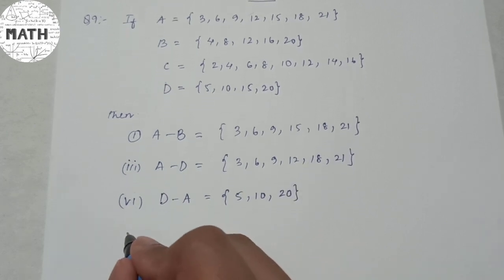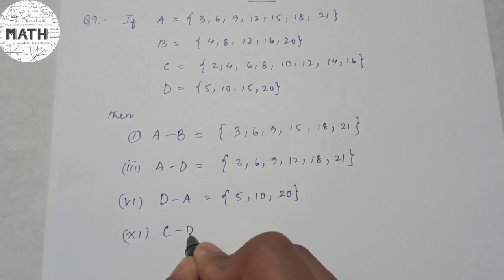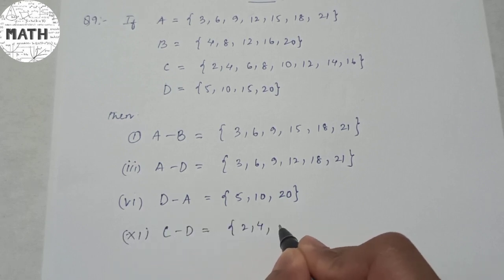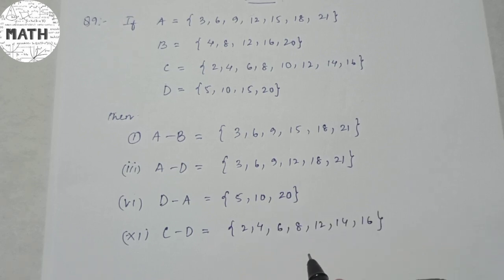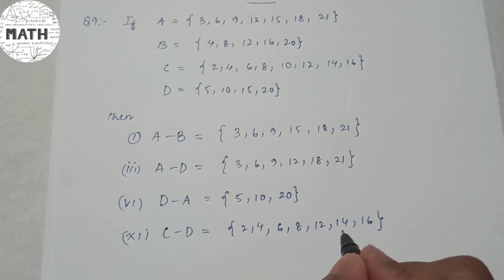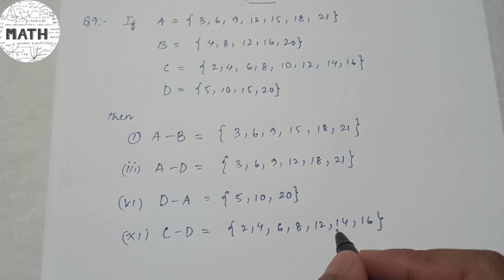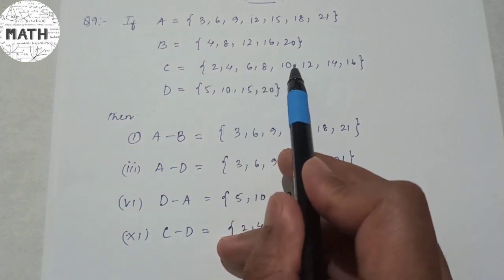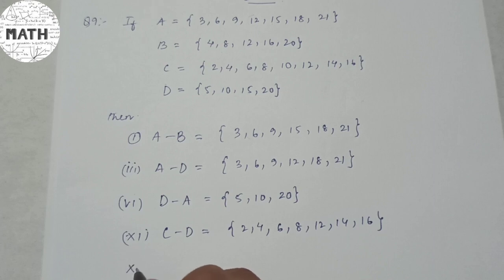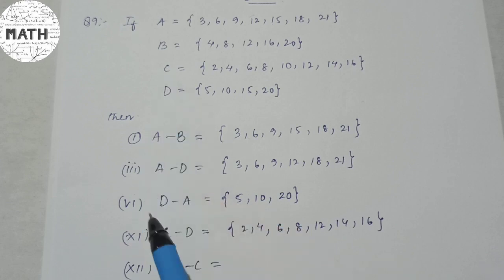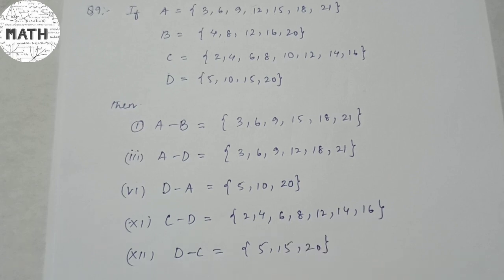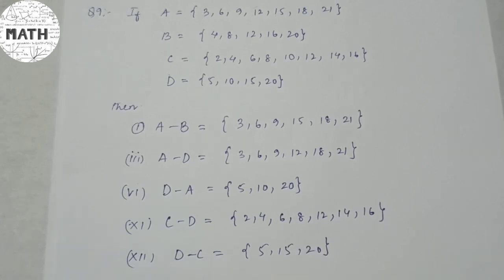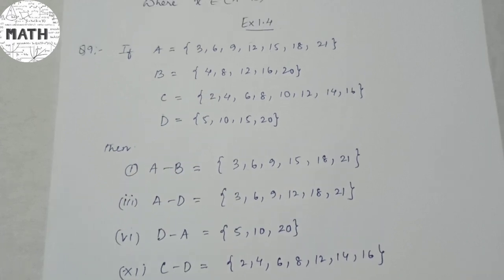For number 11, C minus D: the common element between C and D is 10, so removing 10 from C gives {2, 4, 6, 8, 12, 14, 16}. For number 12, D minus C: the common term is also 10, so removing 10 from D = {5, 10, 15, 20} gives {5, 15, 20}. Those are the examples from Exercise 1.4.